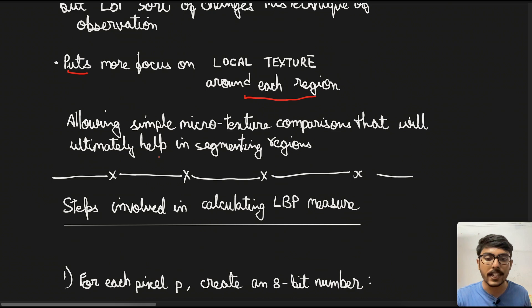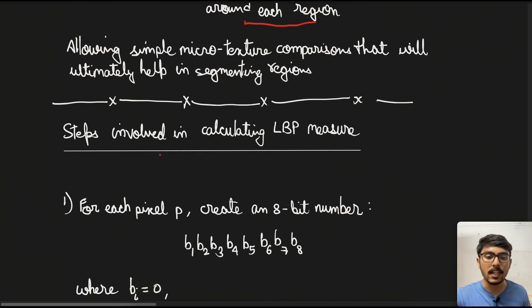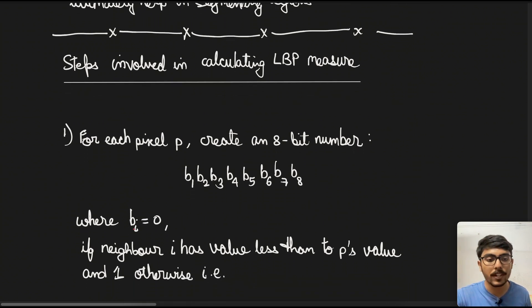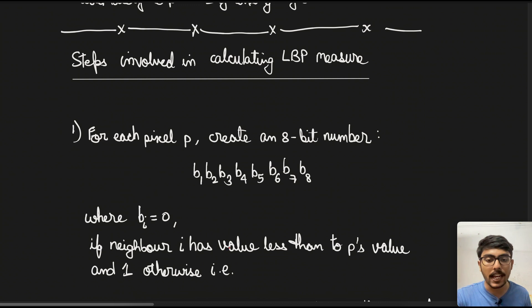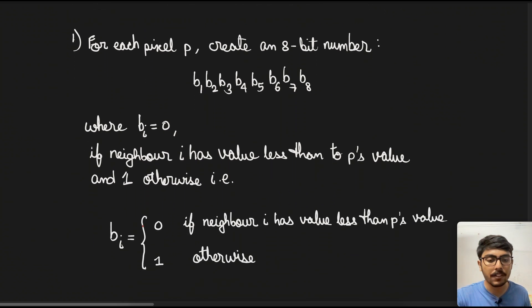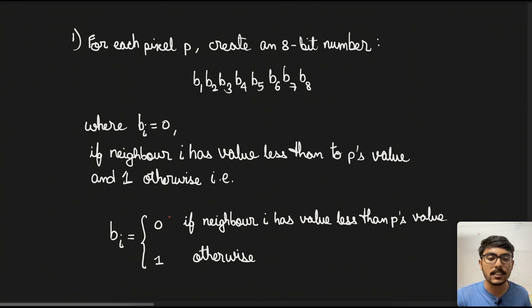Now we come to the steps involved in calculating LBP measure. For each pixel P, first we create an 8-bit number. The digits of that number are shown here like B1, B2, B3 up to B8. And the ith digit can be defined as: BI equals zero if neighbor I has value less than P's value, and one otherwise.